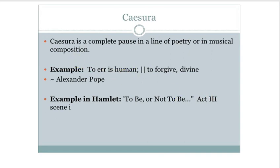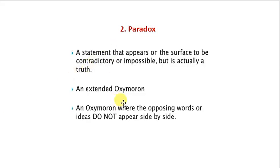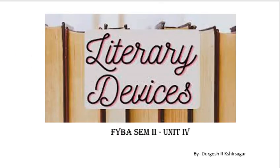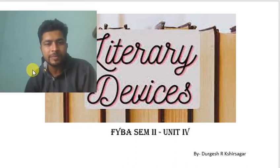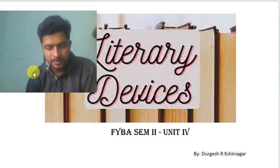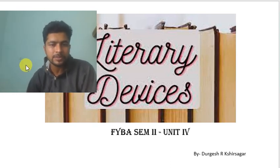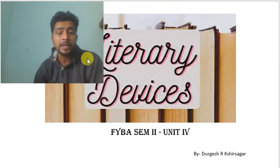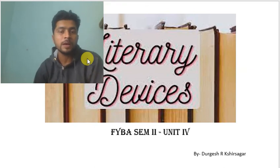Paradox is the statement that appears on the surface contradictory and impossible, but actually it is truth. With this, we stop here. Thank you very much for watching this video. We will meet again in the next lecture where we will learn three more literary terms. Caesura and paradox are now complete. If you have any question or query, you can ask me in the comment box, our Google Classroom, or WhatsApp group. Thank you very much.